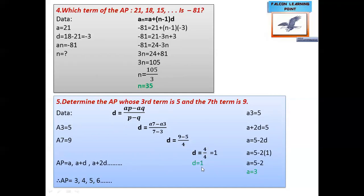Solving, we get d = 1. Now we substitute d into the equation for a3: using the nth term formula, a3 = a plus 2d = 5. Substituting d = 1: a = 5 minus 2 into 1 = 5 minus 2 = 3. So a = 3. Therefore the AP is: a, a+d, a+2d — that is 3, 4, 5, 6, 7, 8, dash dash dash. That's all — it is very easy, practice the questions and you will understand.